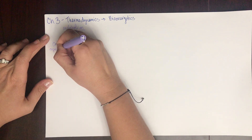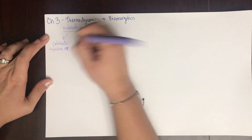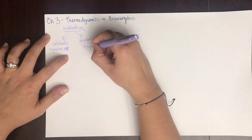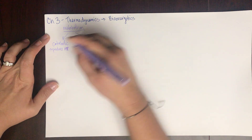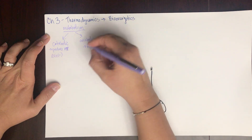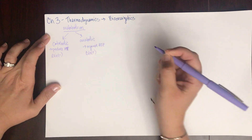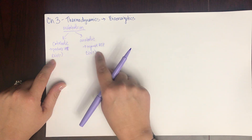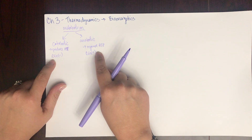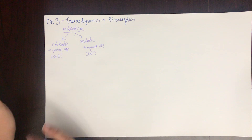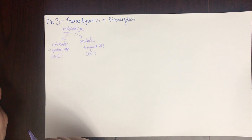Catabolic reactions produce ATP — the molecule we use to transfer energy. Anabolic reactions require ATP. That means catabolic reactions have a delta G that is negative, or less than zero — these are spontaneous. Anabolic reactions have a delta G that is positive, or greater than zero — these are non-spontaneous, or unfavorable. Spontaneous, favorable, non-spontaneous, and unfavorable are all used interchangeably.